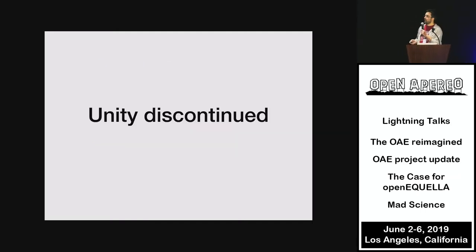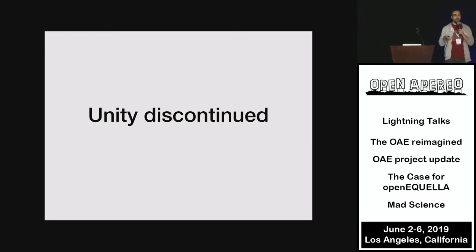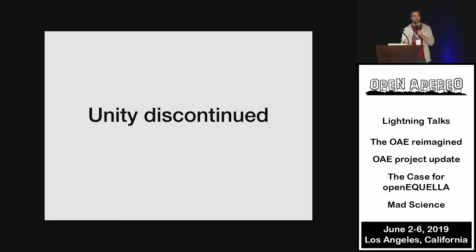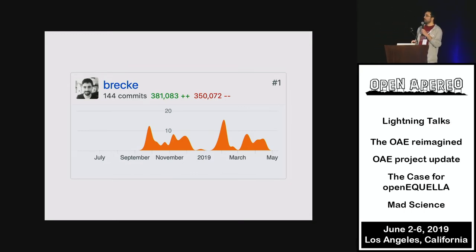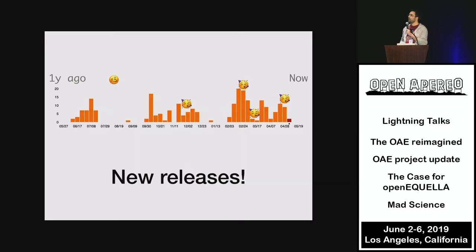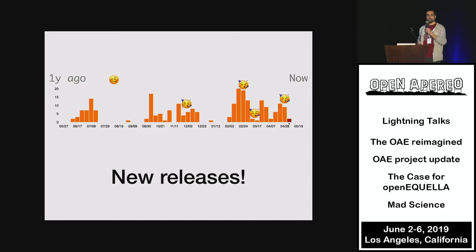It all started with a set event that triggered the rest: Unity, which was a commercial instance of OEE, was discontinued and the company that led Unity pulled out of the consortium. Unfortunately we had to suspend the roadmap and focus on other stuff. As you can see in this GitHub chart, there was a bit of a break there. But since then, we've been able to resume work, and the commit chart now shows four different releases, which is good.